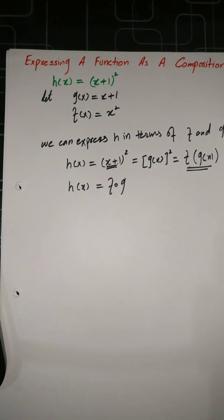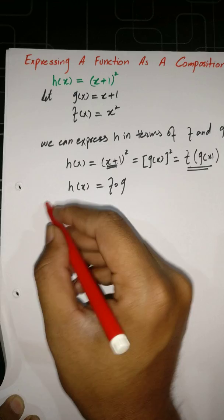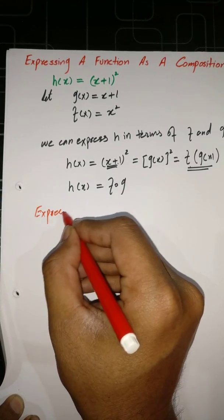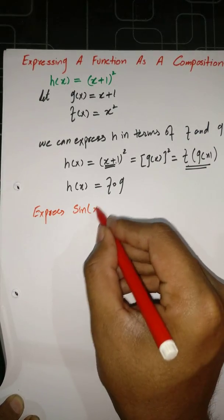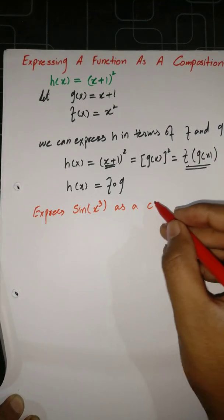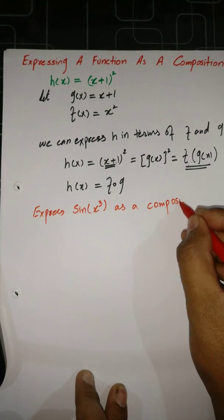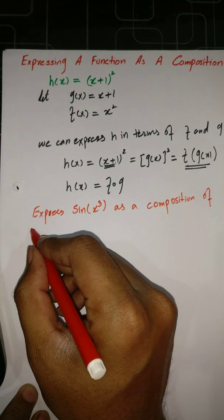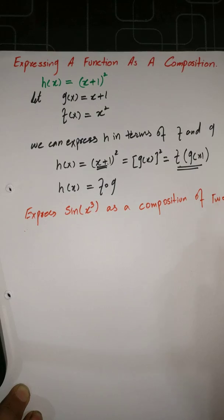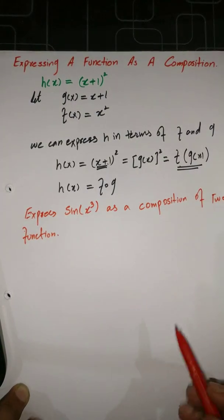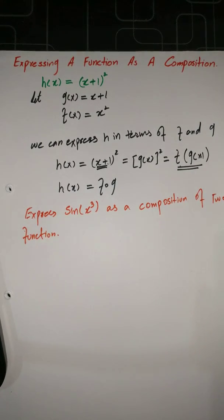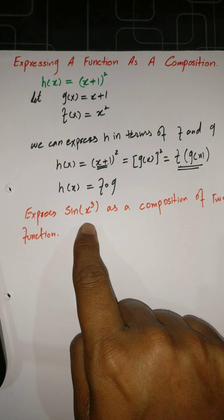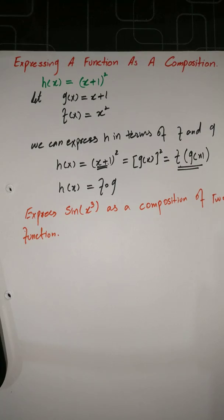Let's take another example. We have to express sin(x³) as a composition of two functions. That is our question and we reduce this function into a composition of two functions. So we have sin(x³) — to evaluate sin(x³) we would first compute x³, so we take x³ separately and consider it as another function.